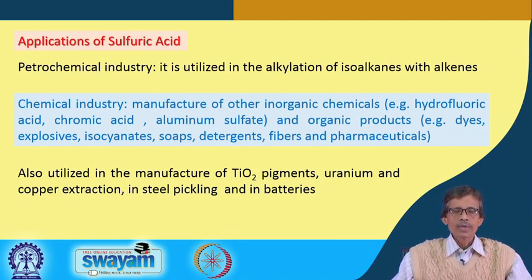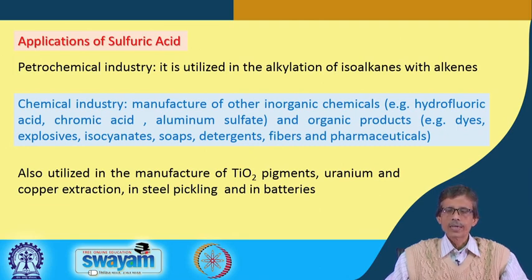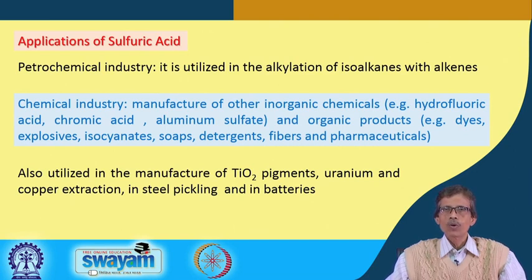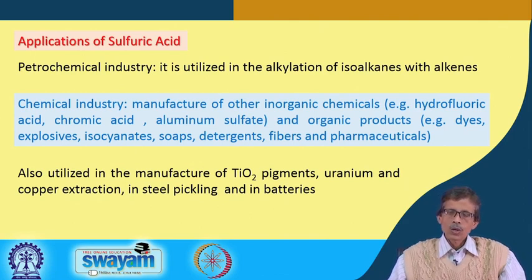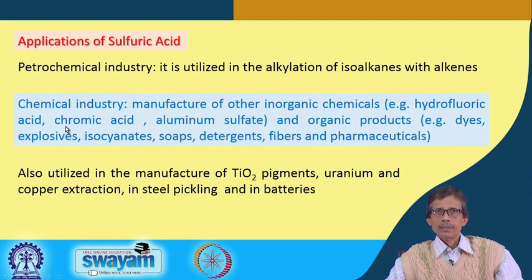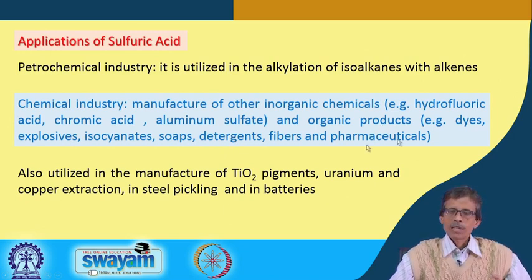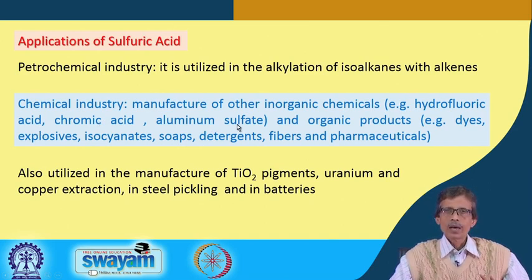After the petrochemical industry, the chemical industry uses sulfuric acid to make useful inorganic chemicals. This is relevant to industrial inorganic chemistry — understanding what basic knowledge and primary chemical industry processes are required. Other inorganic chemicals produced include hydrofluoric acid (HF), chromic acid (Cr₂O₃-based), and aluminum sulfate — three key examples.